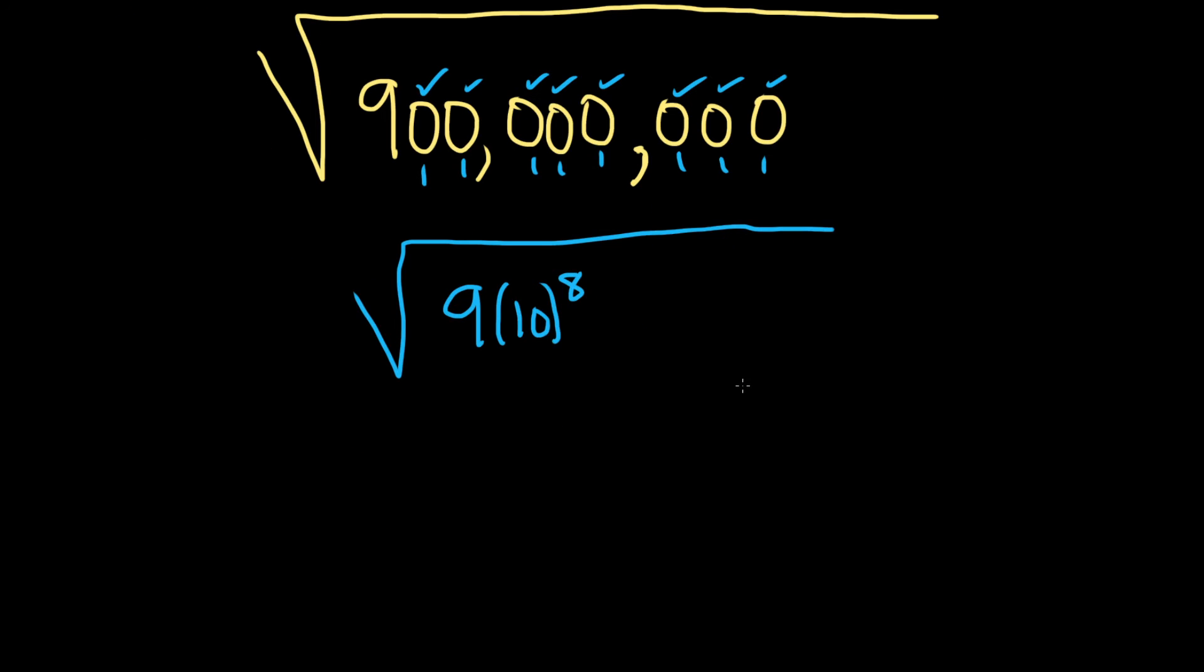Now what we can do is simply take the square root of each piece. So this is the square root of 9 times the square root of 10 to the 8th.